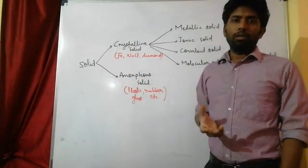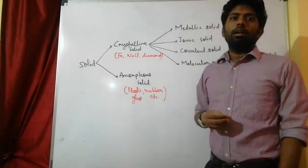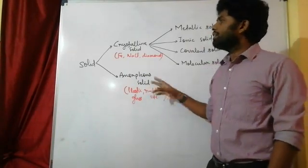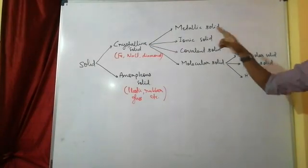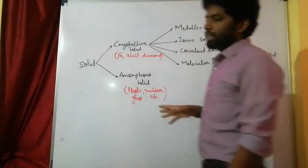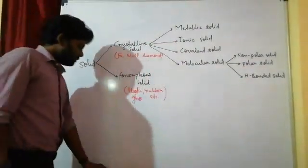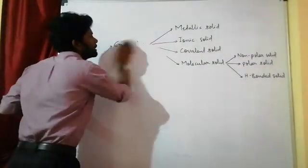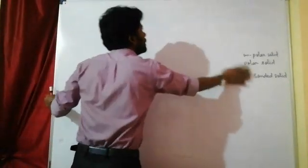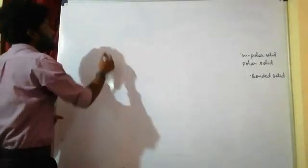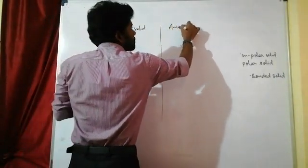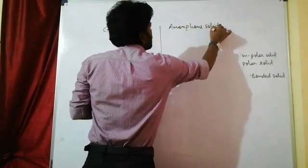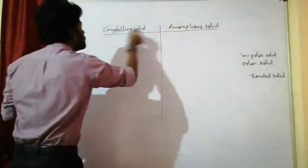Examples of amorphous solids include polymers such as Teflon and PVC.